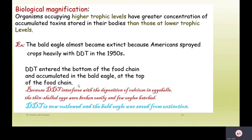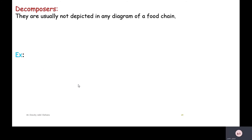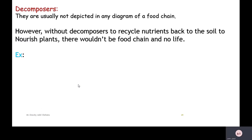DDT is now outlawed and the bald eagle was saved from extinction. Decomposers are usually not depicted in any diagram of the food chain. However, without decomposers to recycle nutrients back to the soil to nourish plants, there would be no food chain and no new life. Examples include bacteria and fungi.